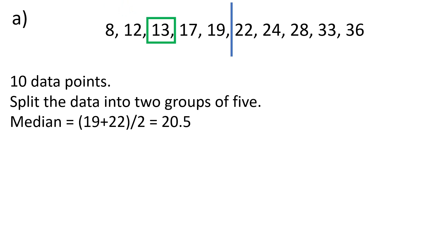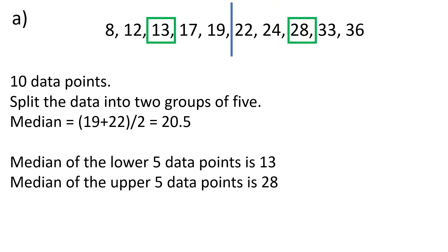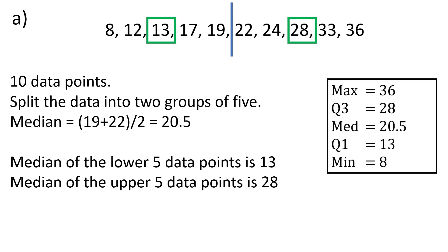Because there's five data points, it's the middle one—the third one in the lower half, the third data point in the upper half. Those are the medians for the lower and upper halves, and that gives us our five number summary: minimum, Q1, median, Q3, max.